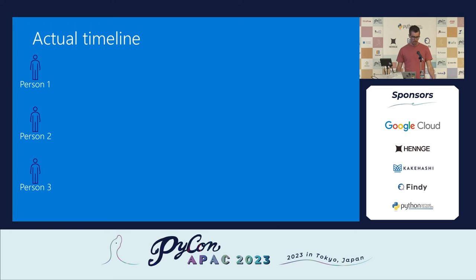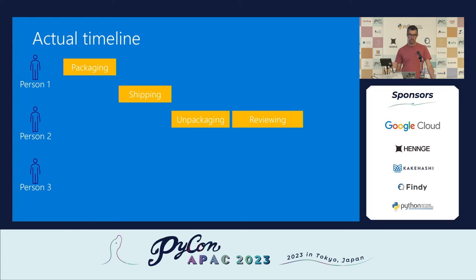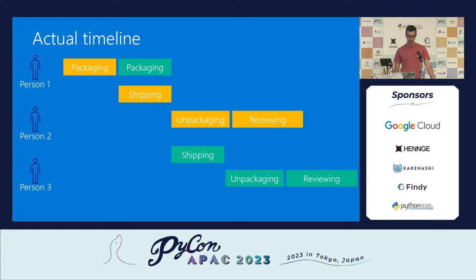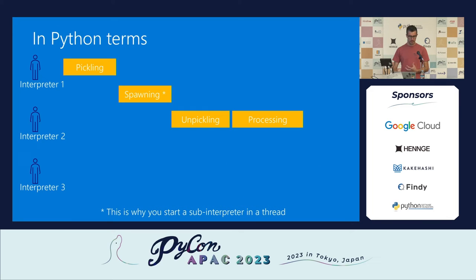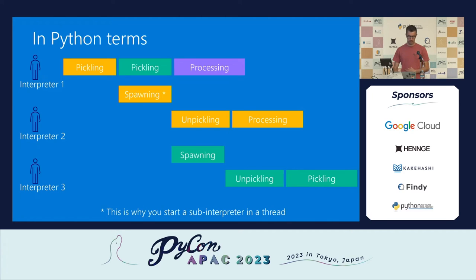Going back to our book timeline: we had packaging, shipping, unpackaging, and reviewing. CPU zero packages the second book and sends it off, then reviews the third book themselves. The answer to having a fourth person was technically yes — you'd ask the fourth person to package the books, freeing up the first person to review. That relates back to Python: often you want one CPU dedicated to managing tasks and not doing the work. In Python terms you've got pickling, spawning, unpickling, and processing.